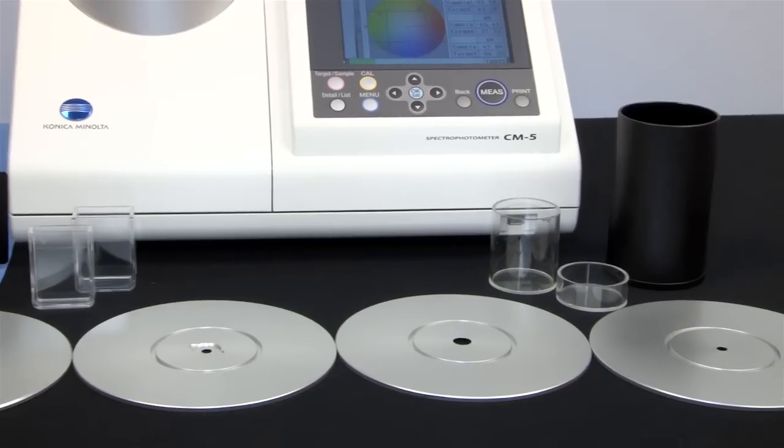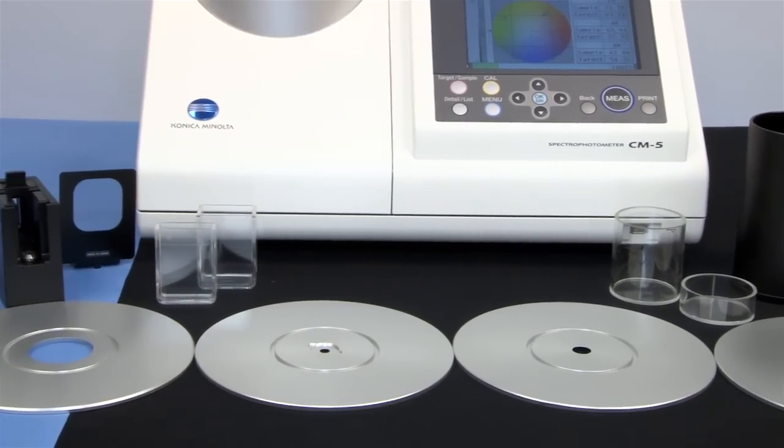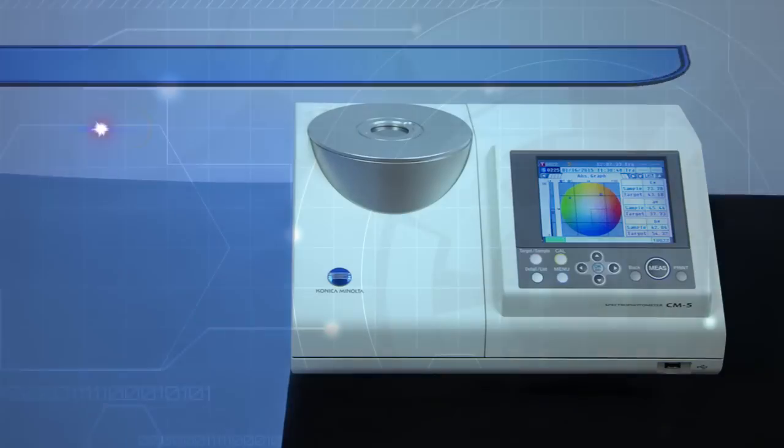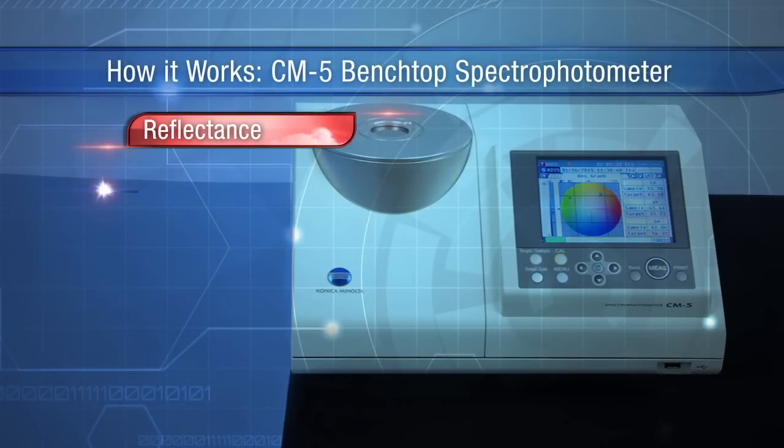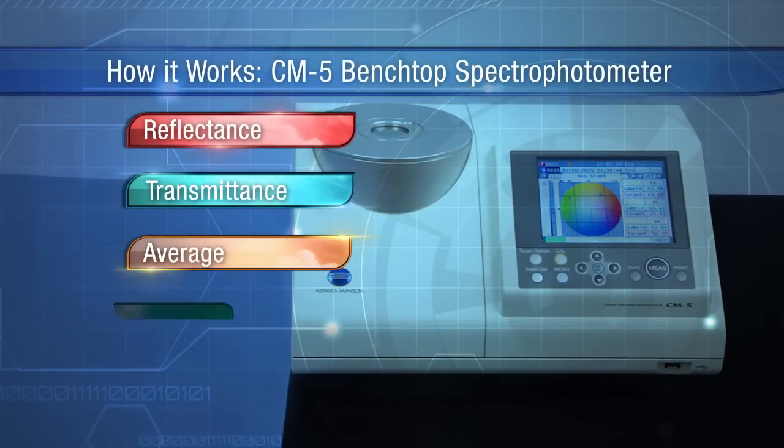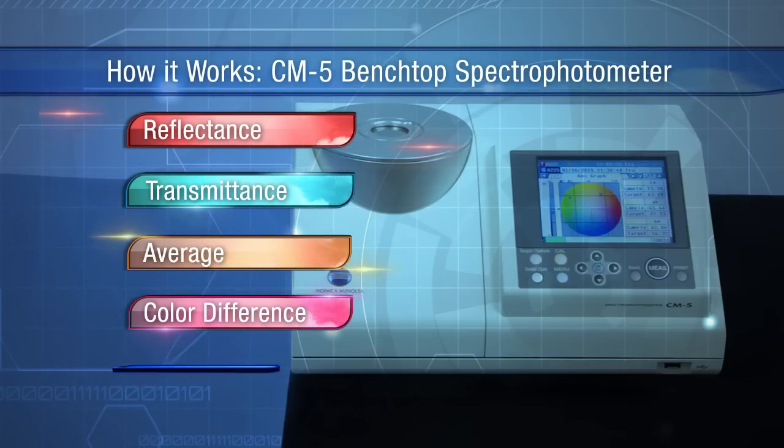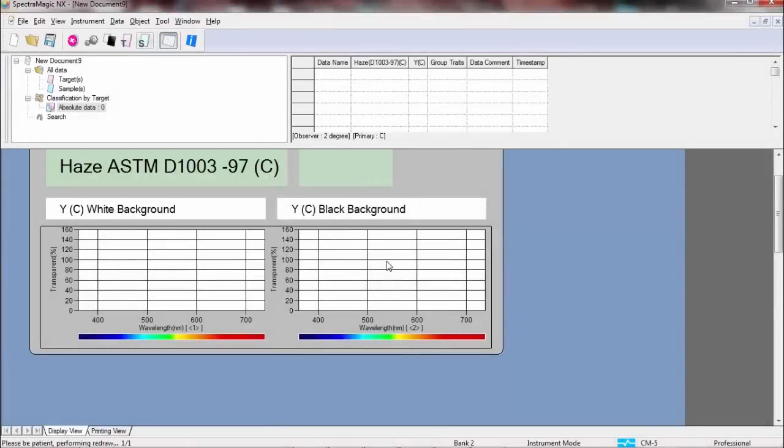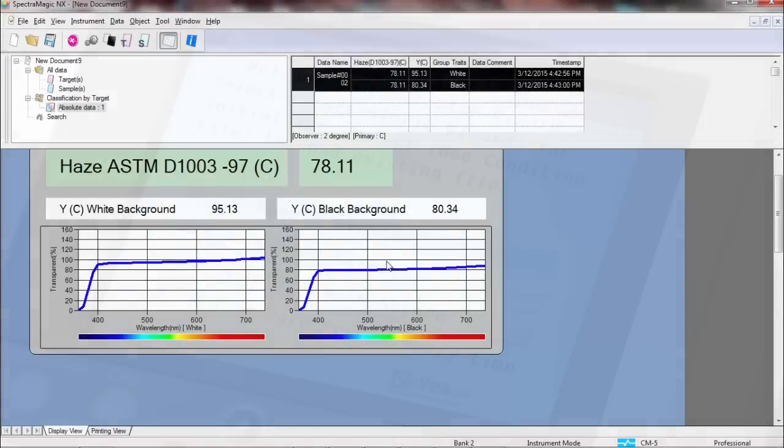A variety of functions and accessories set this innovative spectrophotometer apart. With the versatile CM5, you can measure reflectance or transmittance, easily calculate average measurements for textured samples, create target values for color difference measurements, and calculate haze through powerful SpectraMagic NX software.